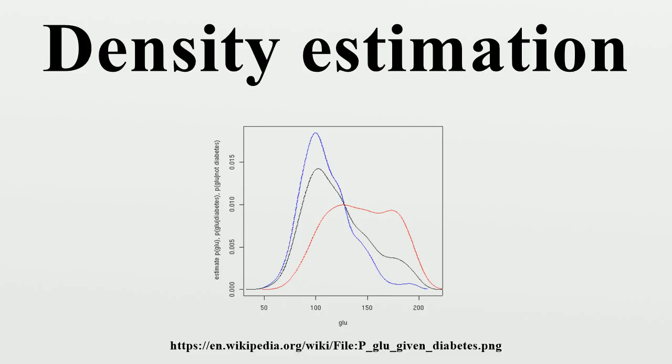The mean of glucose in the diabetes cases is 143.1 and the standard deviation is 31.26. The mean of glucose in the non-diabetes cases is 110.0 and the standard deviation is 24.29.